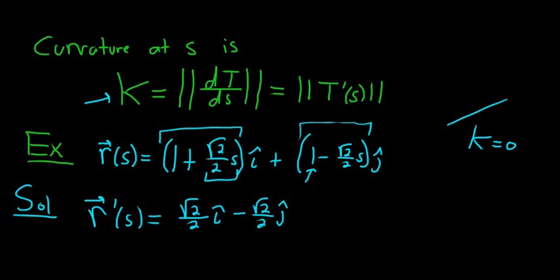So that's our R prime. So recall that T of S is equal to R prime of S over the magnitude of R prime of S. So we have to work this out. And then we can compute T prime.